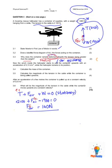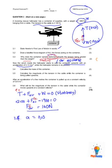And now let's say the winch inside the helicopter starts to pull the container upwards with an acceleration of 0.13. So they're telling us that now there's an acceleration of 0.13. And they ask us to calculate the mass of the container. Now we know the weight is equal to mg. They gave us the weight. They said it was 1960. We are looking for m. We know g is 9.8. And when we solve for m, we're going to get a mass of 200 kilograms. And that is how we would calculate the mass of the container.